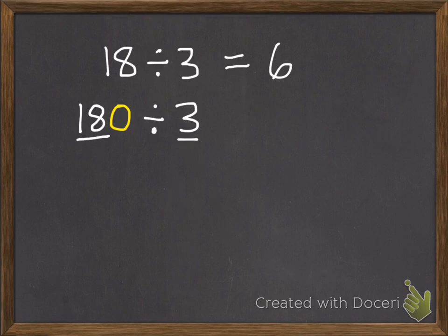There's that 18 divided by 3, and it equals 6. Then we have a 0, because it's 10 times greater, which means the answer will be 10 times greater.